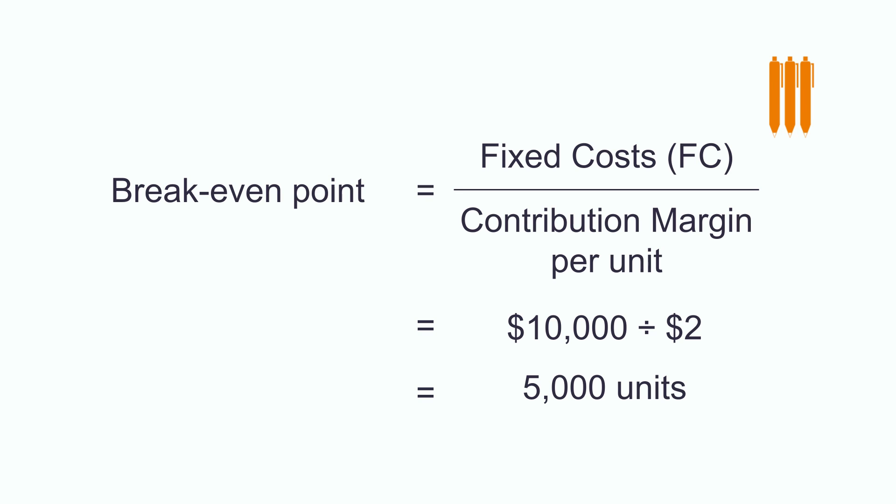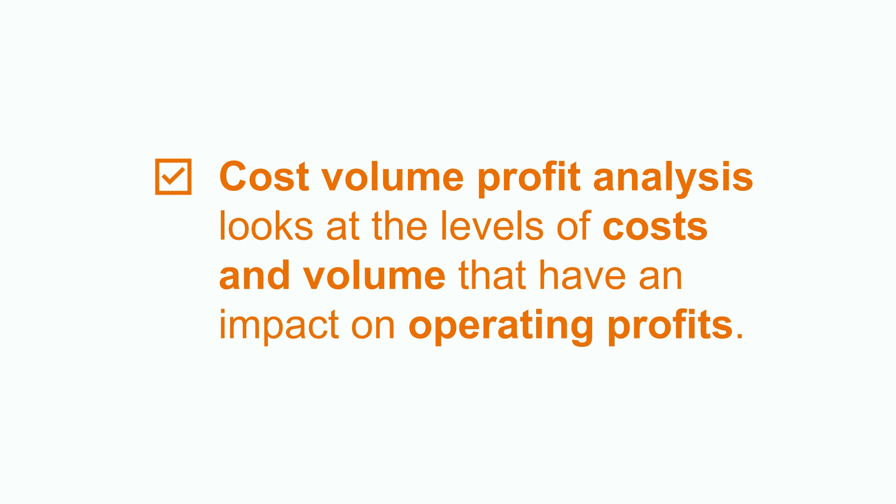Plugging that into the break-even formula: fixed cost is $10,000 and contribution margin is $2, giving an answer of 5,000 units. So you will have to sell 5,000 units just to break even. Every additional pen you sell, you will make a profit. Therefore, the basic concept of cost-volume-profit analysis is to look at various levels of cost and volume that have an impact on operating profits. Please feel free to practice cost-volume-profit analysis on your own or explore more about this topic.